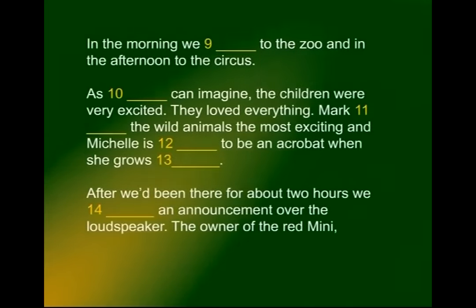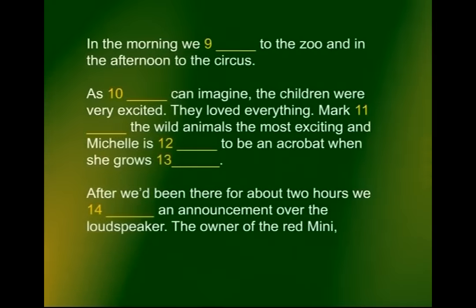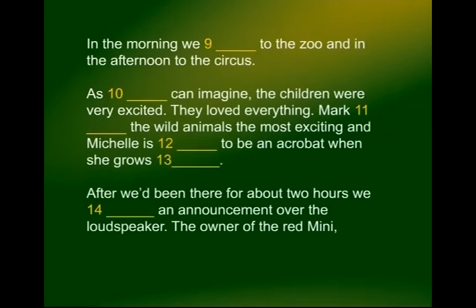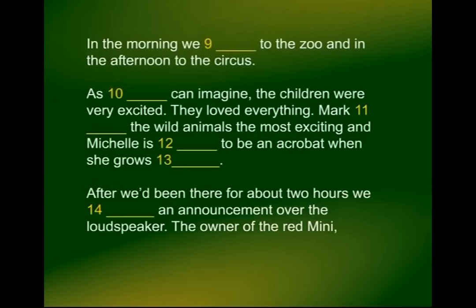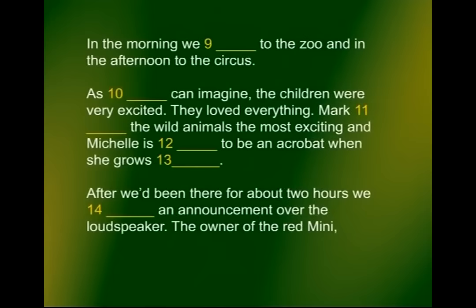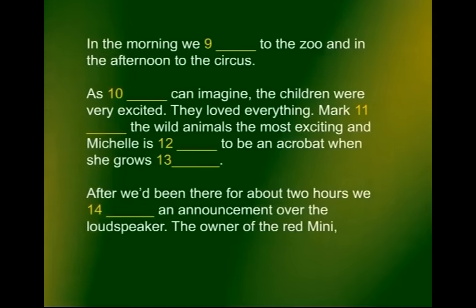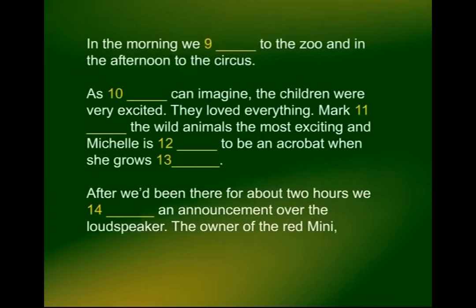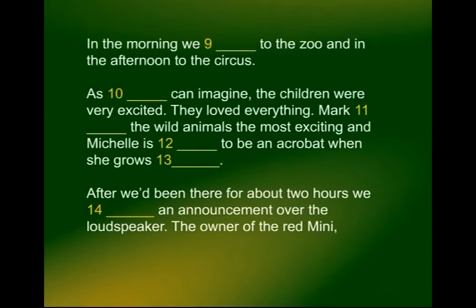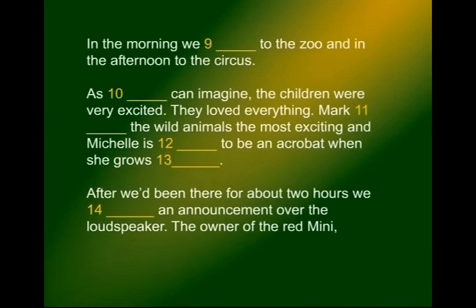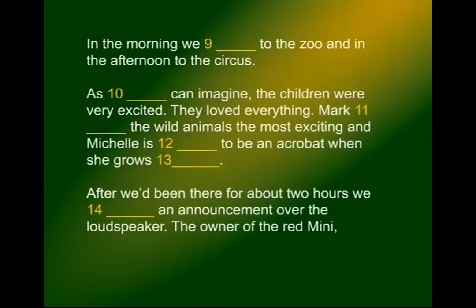'As — can imagine, the children were very excited.' The lady is addressing the person in her letter, so: 'As you can imagine, the children were very excited. They loved everything. Mark — the wild animals the most exciting.' He found the wild animals the most exciting. 'And Michelle is — to be an acrobat when she grows up.' So you will have the word 'going' — Michelle is going to be an acrobat when she grows up.